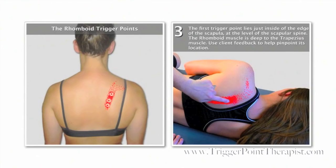The first, or upper, rhomboid trigger point lies just inside the edge of the scapula at the level of the scapular spine. Remember, the rhomboid muscle lies deep to the trapezius muscle, and its trigger points lie closer to the edge of the scapula than the middle trapezius trigger point.